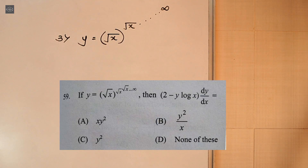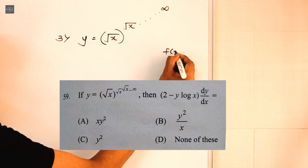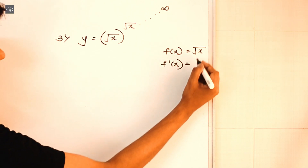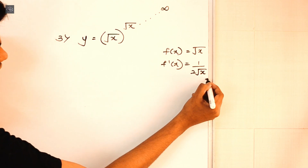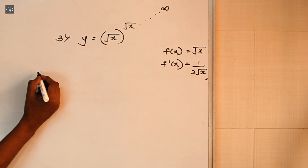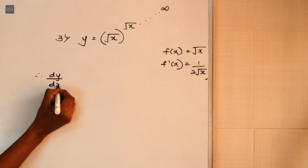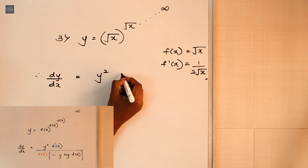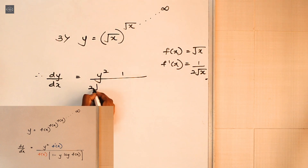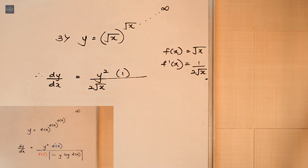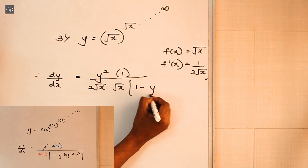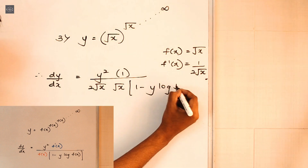Alright, now let's solve one more. Here the function f(x) is root x, and f'(x) — the derivative of root x — is 1 upon 2√x. Now applying the trick: dy/dx equals y squared times f'(x), which is 1/(2√x), upon the denominator f(x) which is √x, times (1 minus y·log f(x)) where f(x) is √x. We can write root x as x raised to 1/2, so we can apply the log property here.